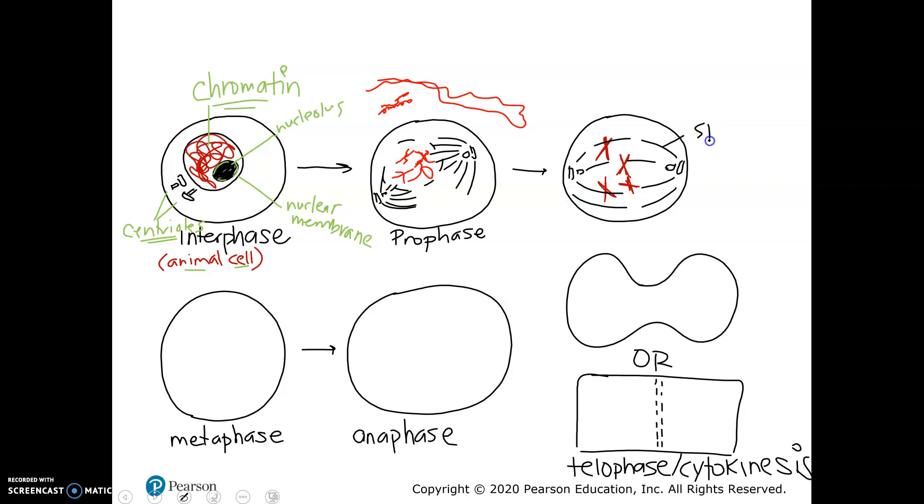And our spindle fibers are almost completely formed across the middle. So this is our spindle, sometimes called the spindle apparatus. Or if you see, just FYI, if you see microtubules, that's what the spindle fibers are made of. They're made of a part of the cytoskeleton called microtubules. So that's not incorrect either. But we do call these spindle fibers.